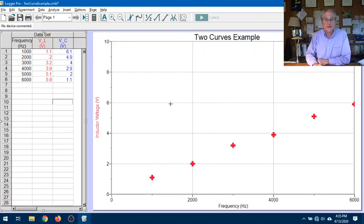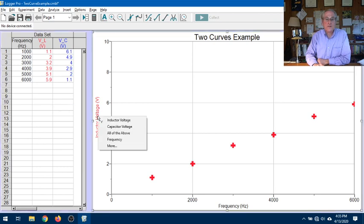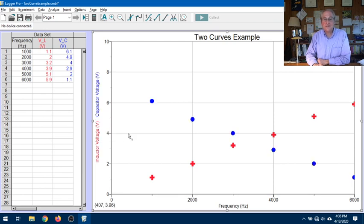It's very easy. You just go and click on the y-axis and it says, what should we plot? The inductor voltage, the capacitor voltage, or all of the above. And you get them both. Easy. And you can see, well, there's going to be a line. They're going to intersect somewhere over here. So that's going to be the resonant frequency in this simulated data, at least.